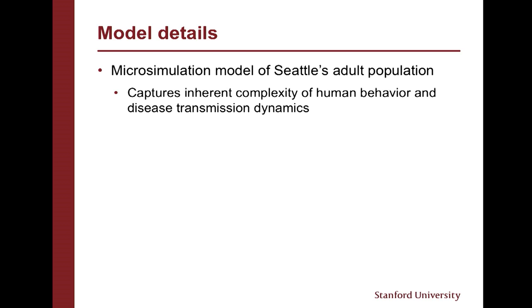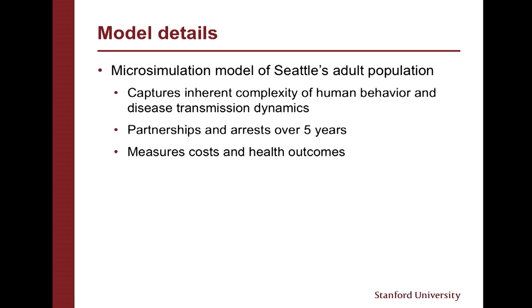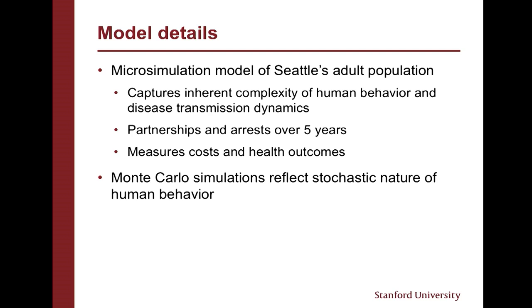We're going to simulate Seattle's adult population, tracking both their partnerships and arrests over five years, and then measure the cost and health outcomes both with a LEAD program and in the absence of it. We want to use Monte Carlo simulation, which is really just a way to introduce randomness into the model so that we're better reflecting the randomness of human behavior. We run this model many, many times and average our results to reduce noise. The model is being programmed in Python, and I want to step into the implementation with you now.